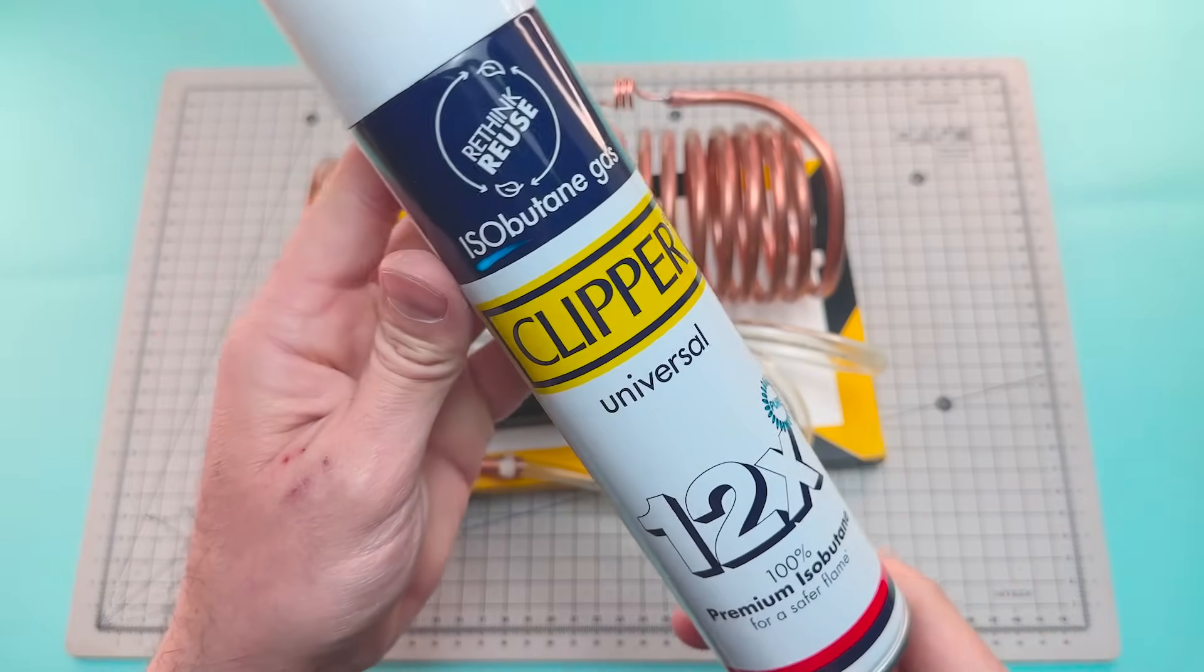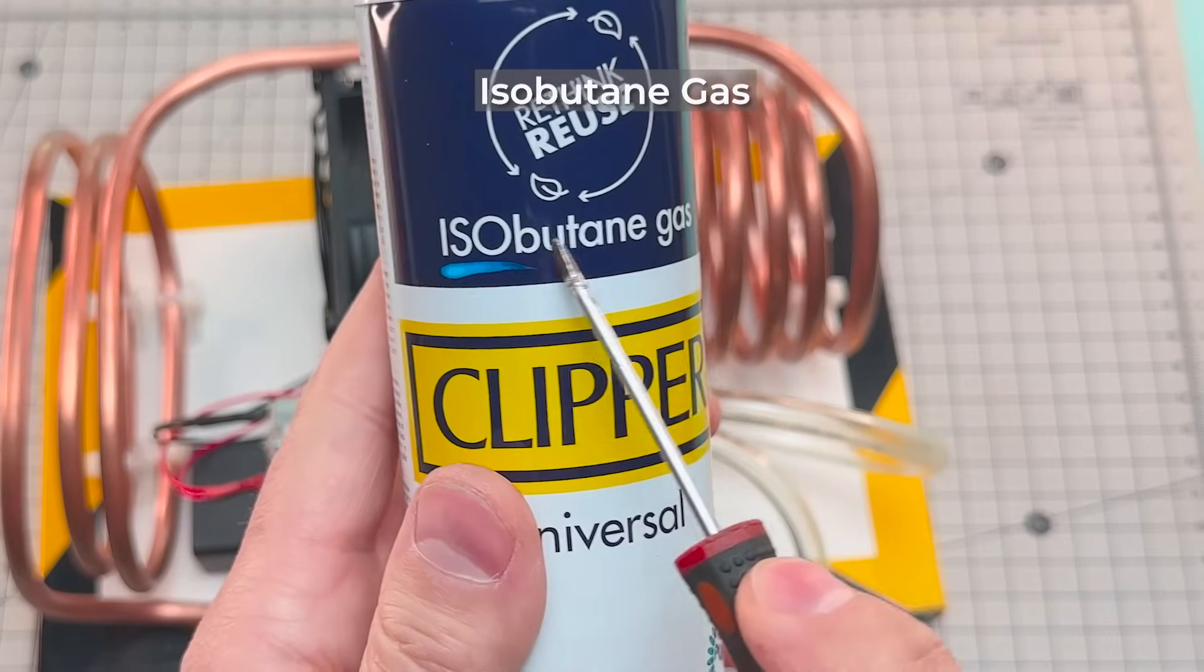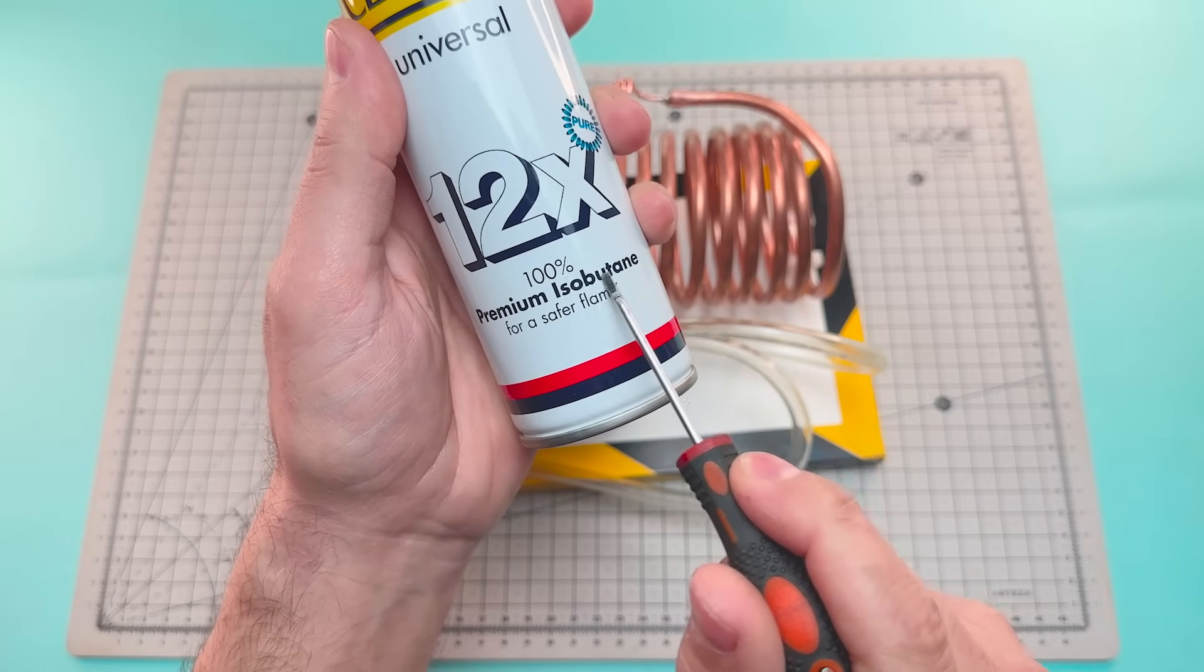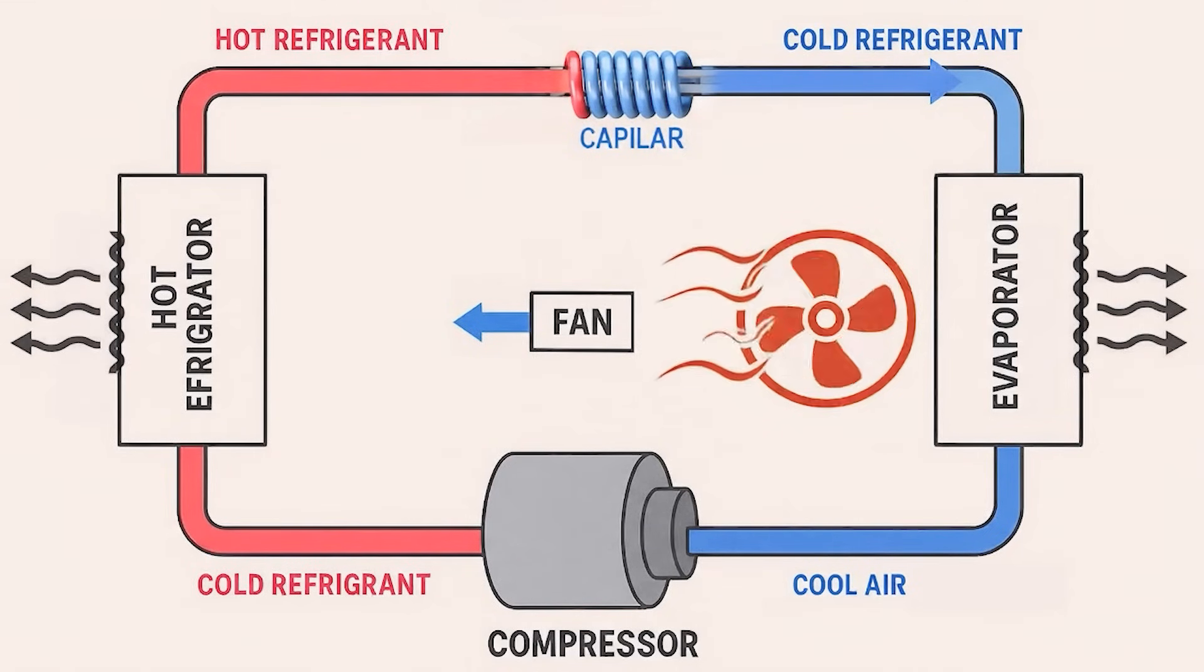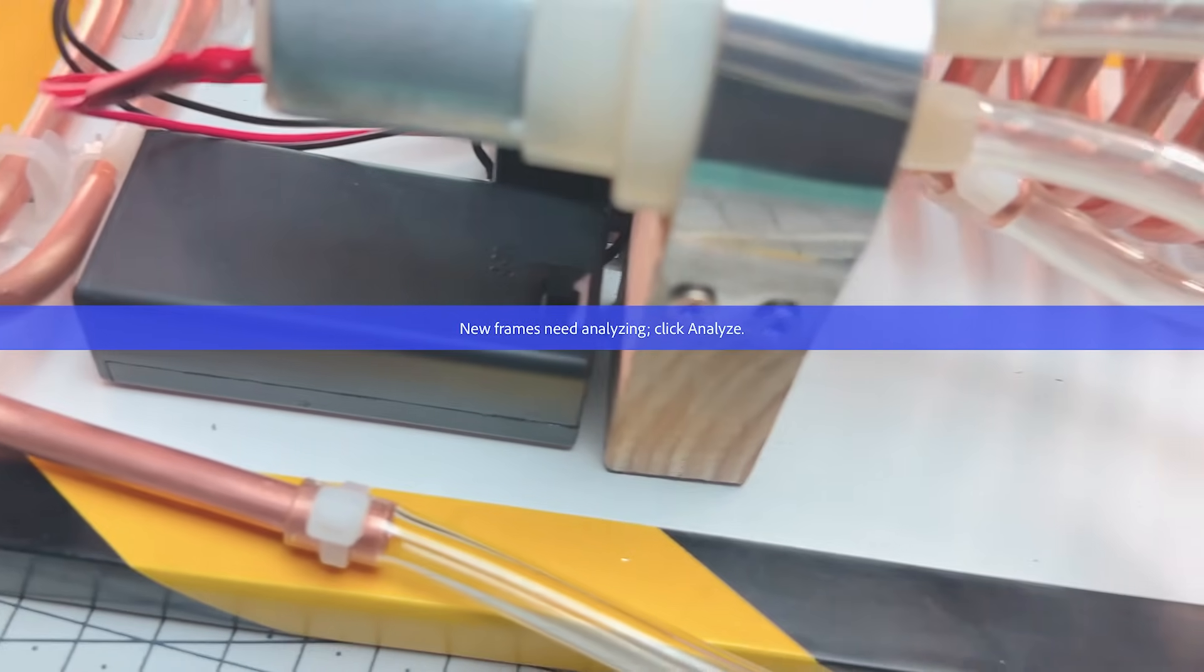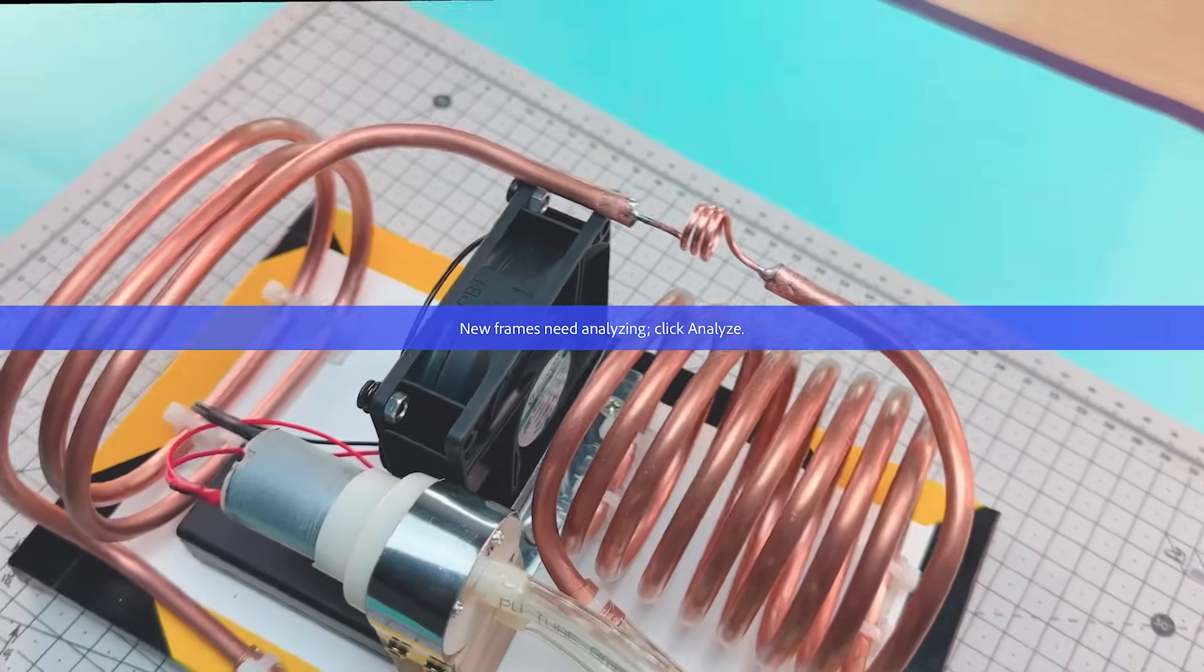Now we're going to charge our circuit with isobutane. The heart of the system is the refrigeration cycle, and although it might seem complex, it's actually based on a simple physical principle, using a gas that when evaporating absorbs heat from the environment. That gas is isobutane, and it's going to be our ally in turning hot air into cold air.